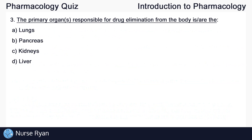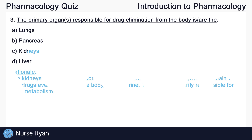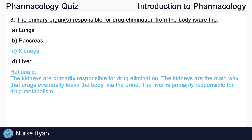Question number three: The primary organ responsible for drug elimination from the body is? The answer here is C — the kidneys. The kidneys are primarily responsible for drug elimination. They are the main way that drugs eventually leave the body via the urine, while the liver is primarily responsible for drug metabolism.